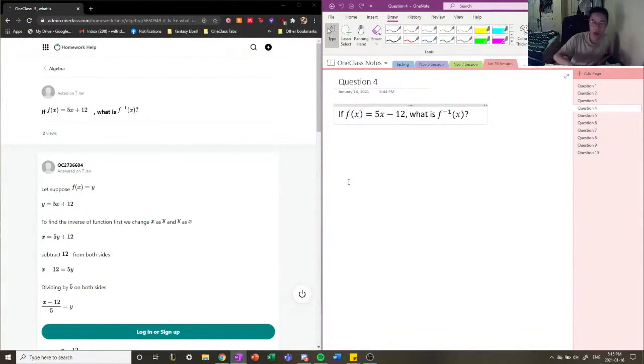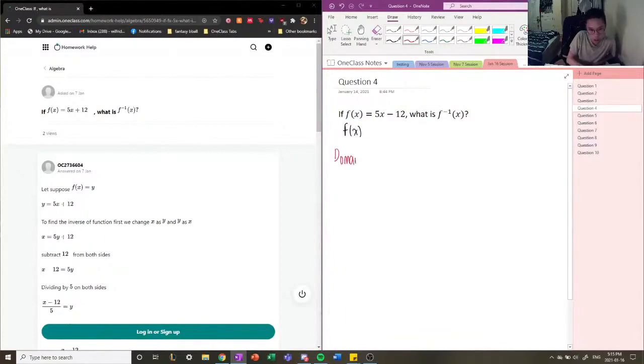So like I described previously, the function f of x connects the domain of a function to its range. So the inverse function basically connects the range of the original function back to its domain.